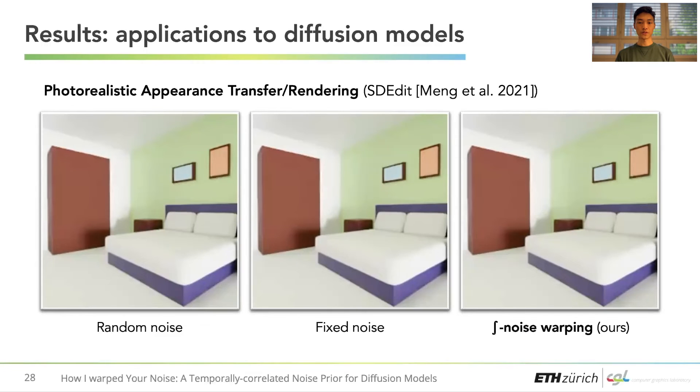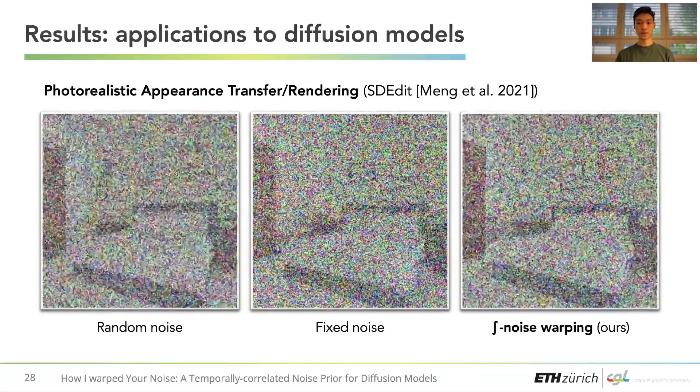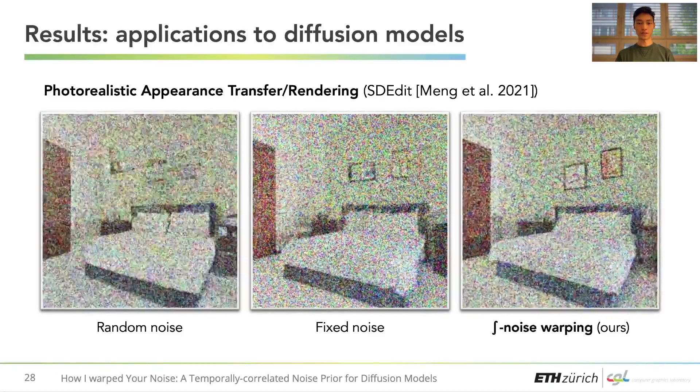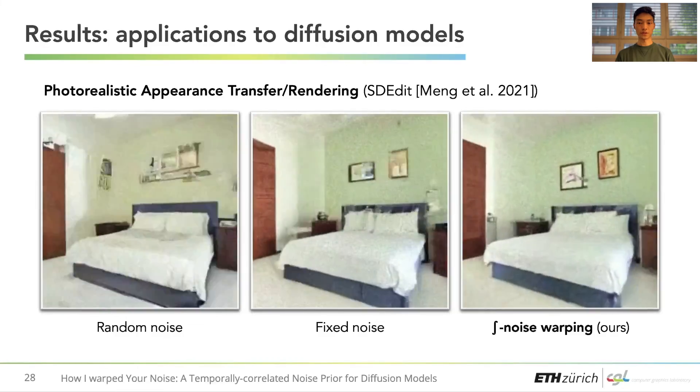We apply our noise warping to several video-video tasks. For example, here we use SDEdit to render a synthetic bedroom scene photorealistically. Our method achieves much better temporal coherency.